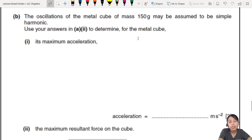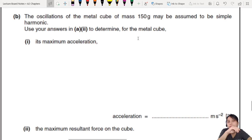The oscillations of the metal cube, 150 gram, may be assumed to be simple harmonic. Okay, we assume simple harmonic. Which means, all the equations for simple harmonic motion, we can use. For sure can use. Use your answers to determine, for the metal cube, the maximum acceleration. Whoa, whoa. What is maximum acceleration? For simple harmonic motion, acceleration is negative omega square x.